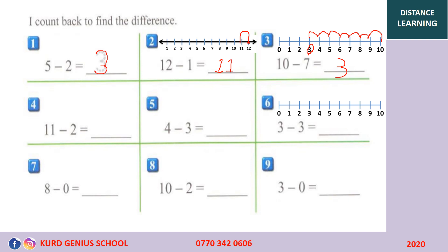Very good. I leave the rest of the examples for you to practice. Let's do number 6 as well: 3 minus 3. We count back from 3, counting back 3 numbers — 1, 2, 3. So 3 minus 3 equals 0, because we stopped on the number 0.